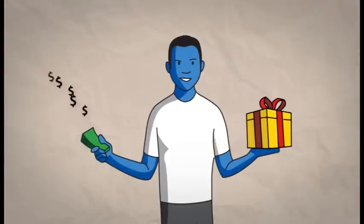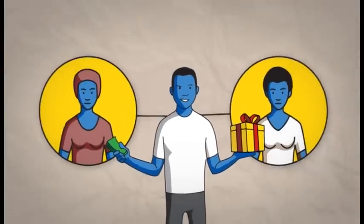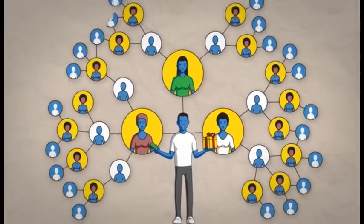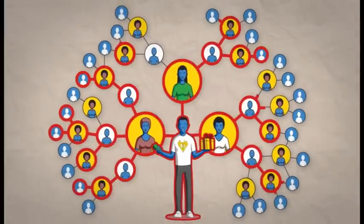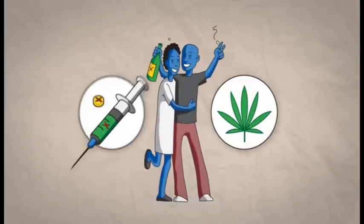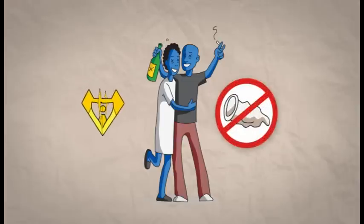Exchanging money, gifts or favors for sex is dangerous. This often means that one or both partners have many partners in a large sexual network, putting them both at risk for HIV. Getting drunk or using drugs before having sex may cause people to take risks that they may regret later.